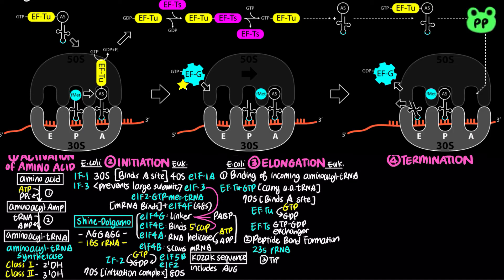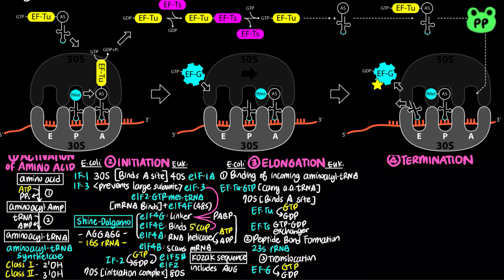During the last step, translocation, GTP-bound EFG binds to the ribosome. GTP hydrolysis facilitates translocation. First, the ribosome moves one codon toward the 3' end of the mRNA. EFG–GTP mimics EF-Tu–tRNA, and the peptidyl-tRNA completely shifts to the P site. The A site is now open for incoming aminoacyl tRNA. The uncharged tRNA dissociates from the E site. This cycle of three repeating steps continues to add new amino acids to the growing polypeptide chain.